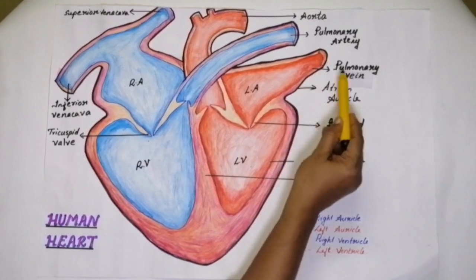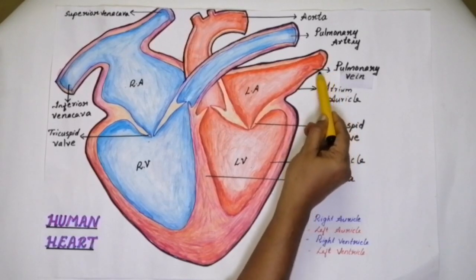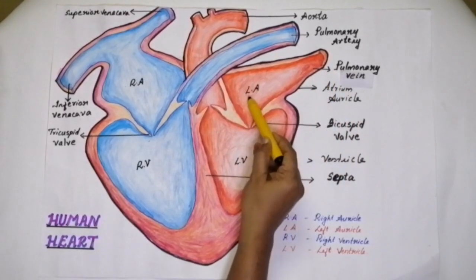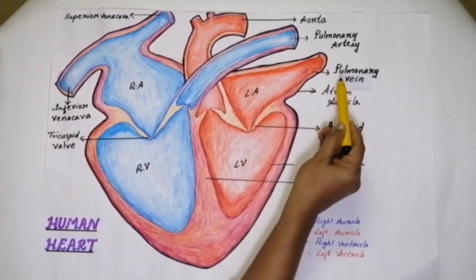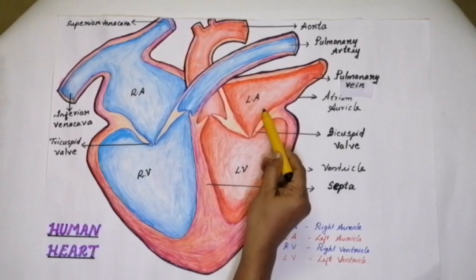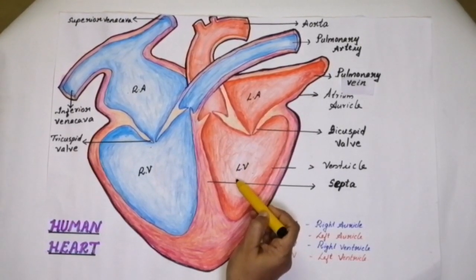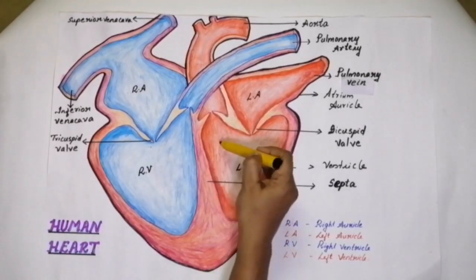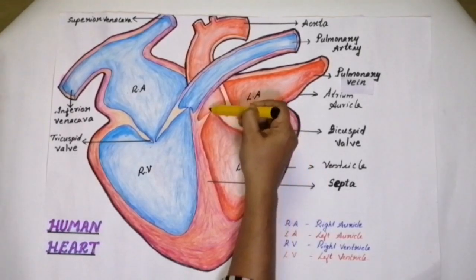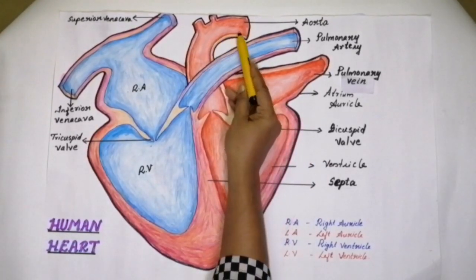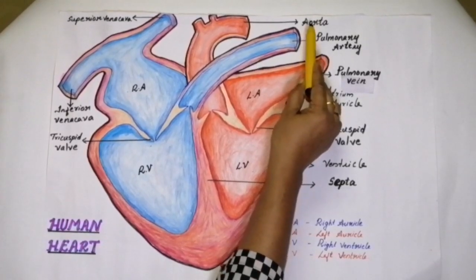You can also see another blood vessel called the pulmonary vein. This pulmonary vein opens into the left auricle, or left atrium. Pulmonary vein is the blood vessel which opens into the left atrium. Here is the left ventricle, and from the left ventricle there arises another blood vessel called the aorta.